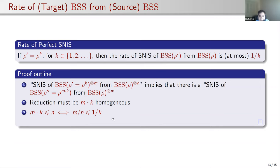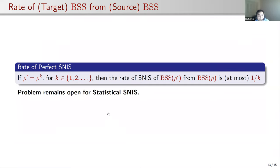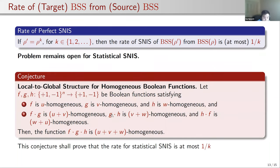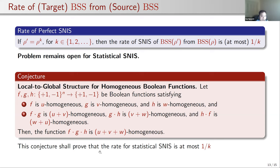For statistical simulations, this rate problem remains open. We have the following conjecture related to harmonic analysis: if we have three functions that are all homogeneous, and any pairwise term is also a homogeneous Boolean function, then their product must also be homogeneous. If we can prove this, we can establish a local-to-global structure that would help us prove the rate result for statistical simulations.